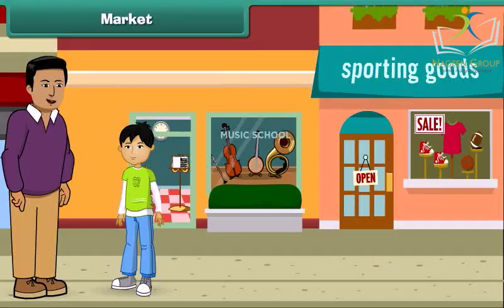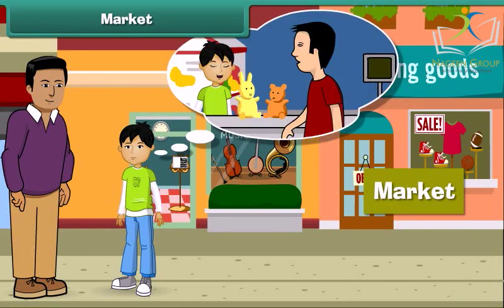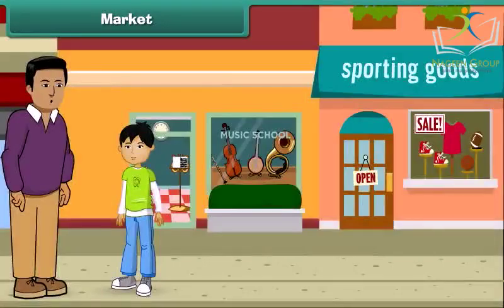Hey, look here — this is a market. Yes, yesterday we bought some toys and dresses from this market. We buy so many things from the market. I remember, Dad, you buy vegetables and fruits from the market as well. Yes, that's right. Let's move ahead.